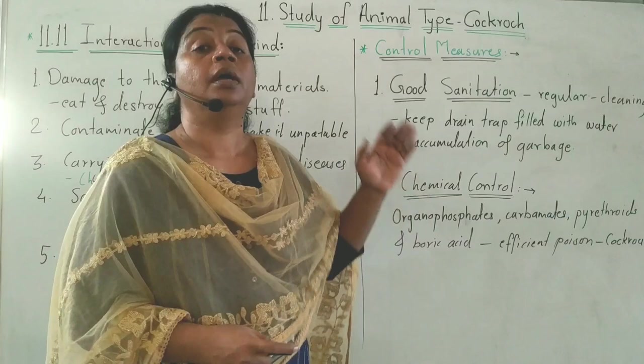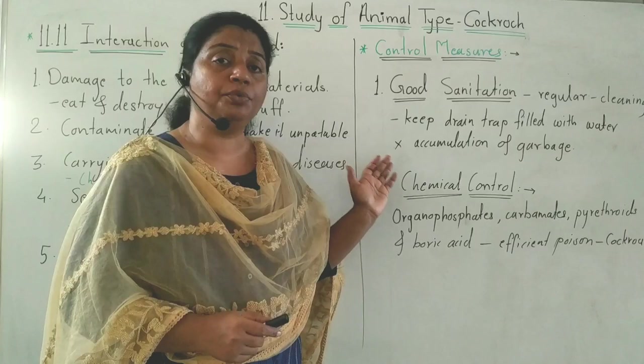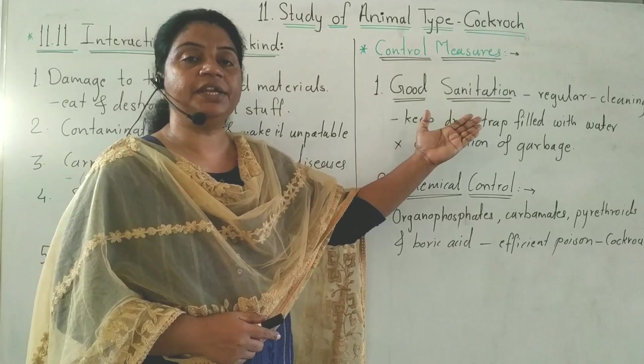Now we will see the control measures. As the cockroach is an economically harmful organism, it must be controlled efficiently. There are two control measures: first is good sanitation, and second is chemical control.